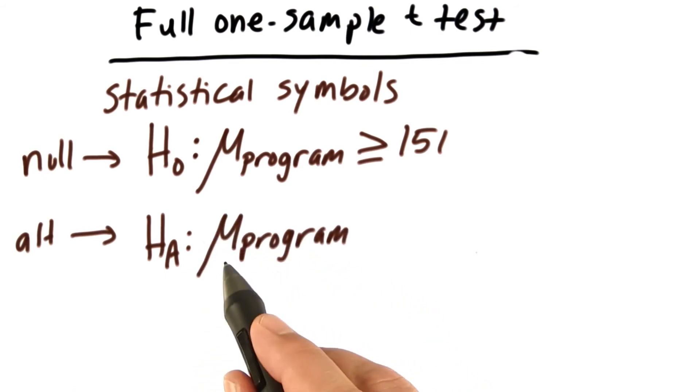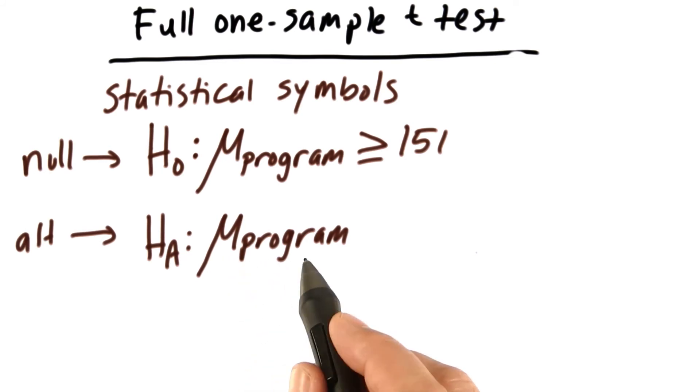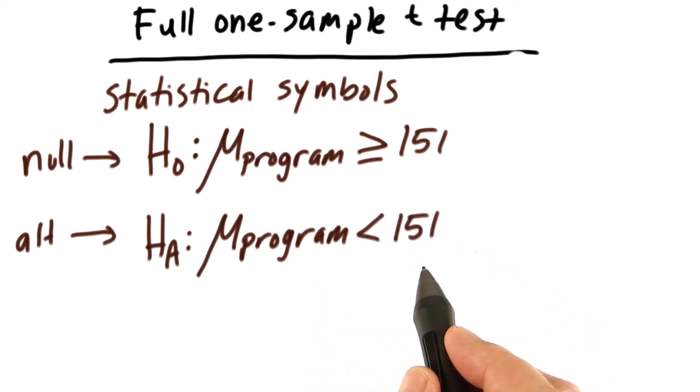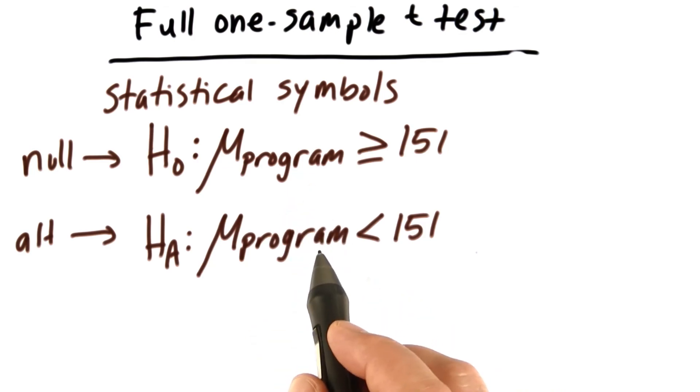We again put the value of the population parameter. If we could go to all co-op members and give them this new program, what would their average cost be per week? And we hope there will be a reduction, so we write less than 151. Be sure to write these down on your sheet of paper.